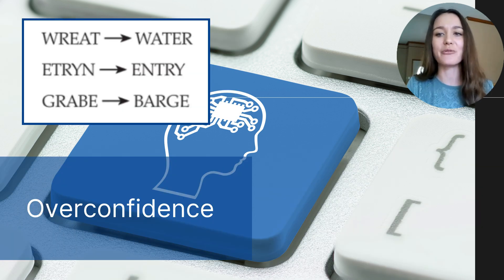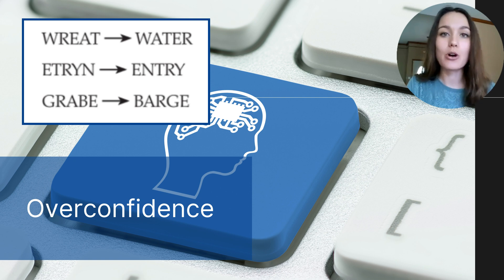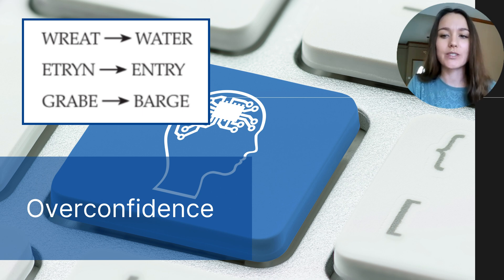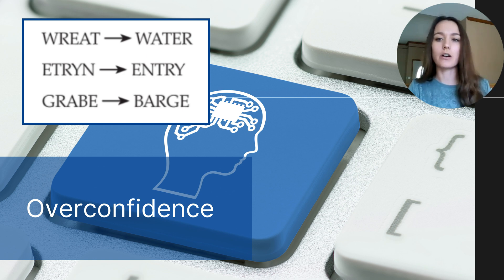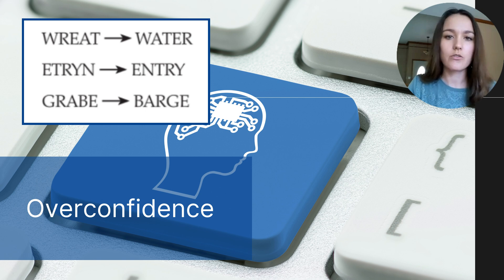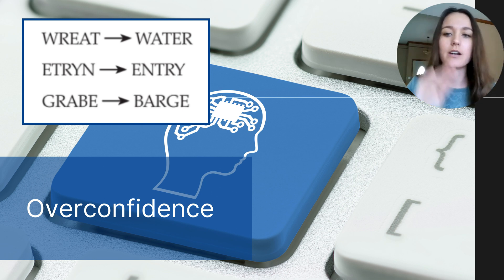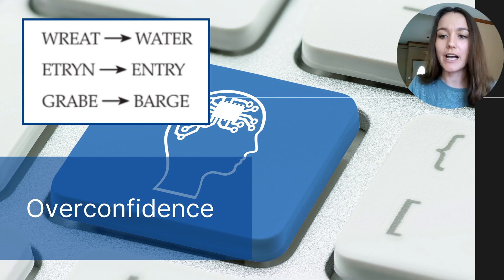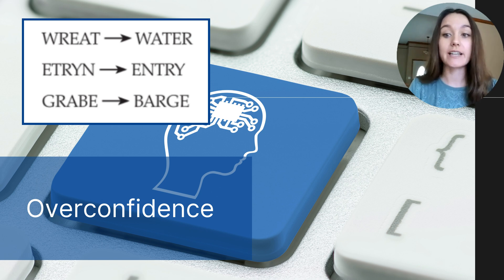A similar cognitive pitfall is the problem of overconfidence. As humans we tend to think we know more than we actually do — we are often more confident than we are correct. A great example comes from a 1978 study by Richard Goranson using anagrams. He showed participants scrambled letters and asked how long they thought it would take to unscramble them into the words water, entry, and barge. Most people predicted about 10 seconds on average, thinking it was pretty easy.